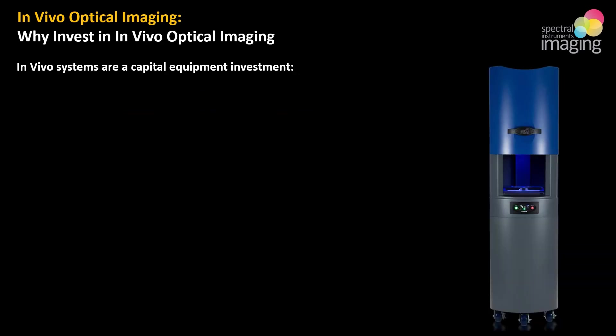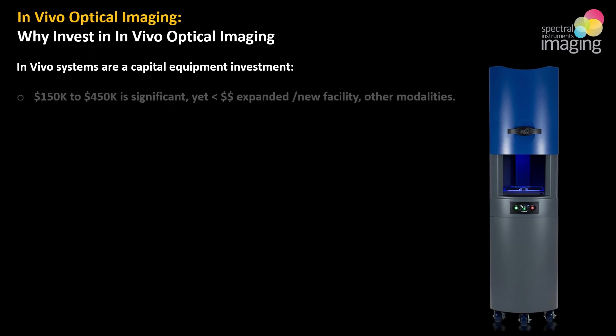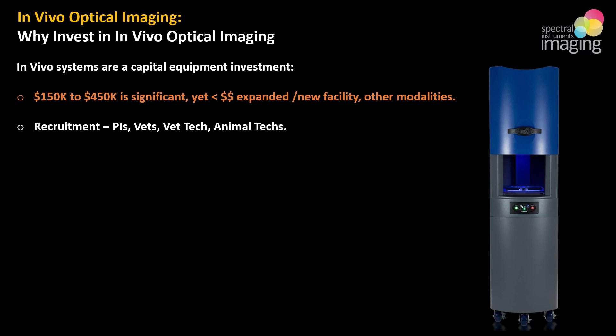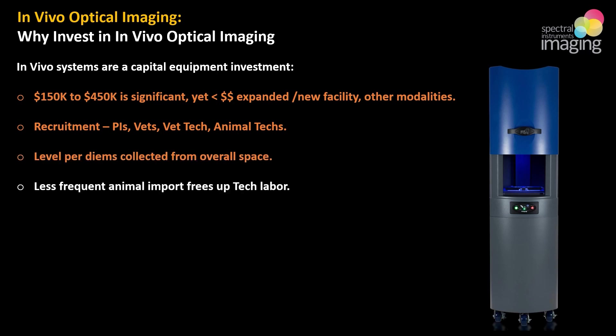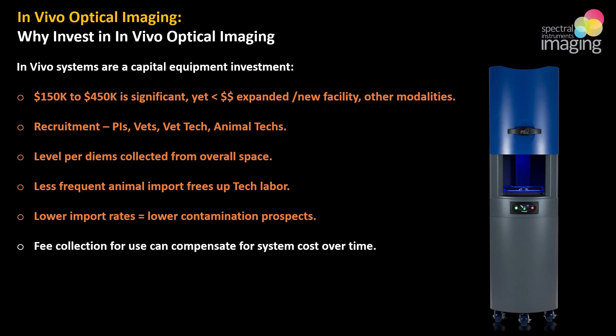So why would either an animal research facility or core invest in preclinical optical imaging? It is a capital equipment investment, typically over $100,000, but a single multi-user system is less costly and often easier to attain than an expanded or new facility, and typically less expensive than the other modalities mentioned. Access to these systems is frequently needed for the recruitment of PIs and may be a tempting draw for other researchers and technicians. As these systems lessen the fluctuations of animal numbers, per diems and hourly fees may remain steadier. As cohorts remain over time, less labor is needed for import-export, and fewer import events can mean fewer chances of outside contaminants. There is a fee collection, typically employed, that may cover a variety of other expenses.